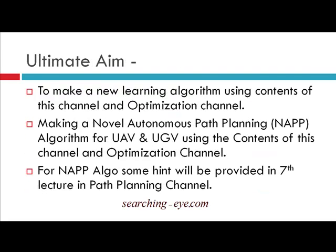The final aim of this channel is to make a new learning algorithm by combining the content of this Reinforcement Learning channel with the optimization channel, also incorporating machine learning content. The second aim is to develop an autonomous path planning algorithm for UAV and UGV — that is, autonomous air vehicles and autonomous ground vehicles.